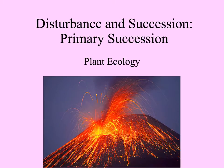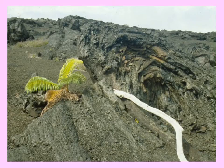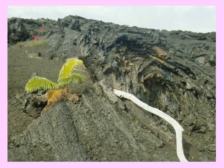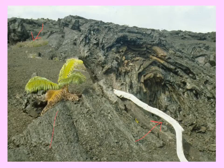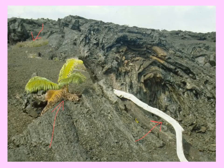Everything changes all the time. Things get disturbed and communities go through a process called succession. Here's a picture of hardened lava after a volcanic eruption in Hawaii some years ago. You can see here and there some little patches of green moss and fuzz, and a dead tree burned up in the eruption, but here and there ferns starting to grow. This is an example of primary succession — plants starting to grow on a bare substrate where no plants have grown before.